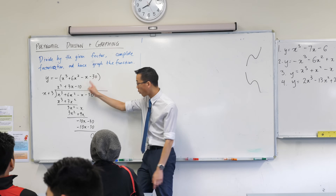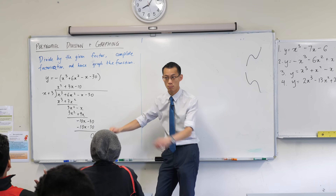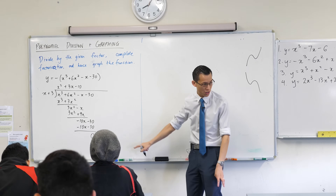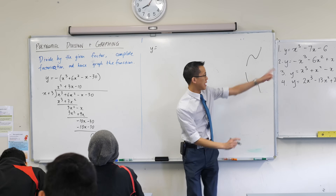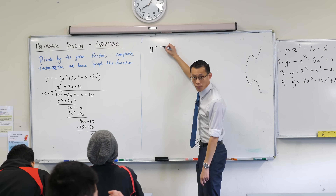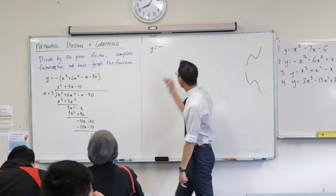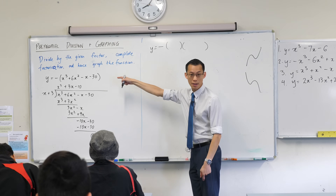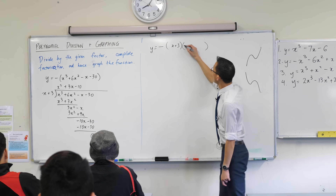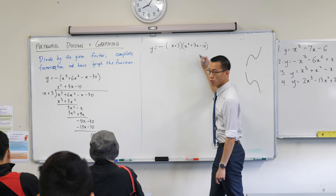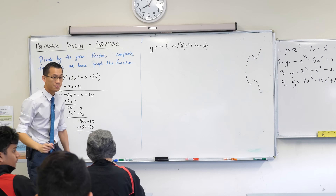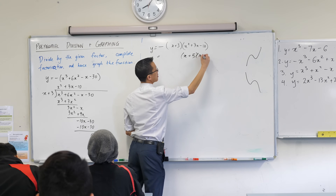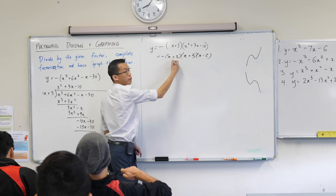Do you all agree with my quotient and remainder? Thumbs up? So at this point, this is actually the hardest part of it. I can now use this division to say y is not just equal to that thing we started with, but with a minus sign at the front — because that's what I did on my first line — and now I can write the factorization that I came up with from my divisor and my quotient. So here they go: x plus 3, times x squared plus 3x minus 10. Who's already factorized the quadratic? Do I have some agreement from everyone?